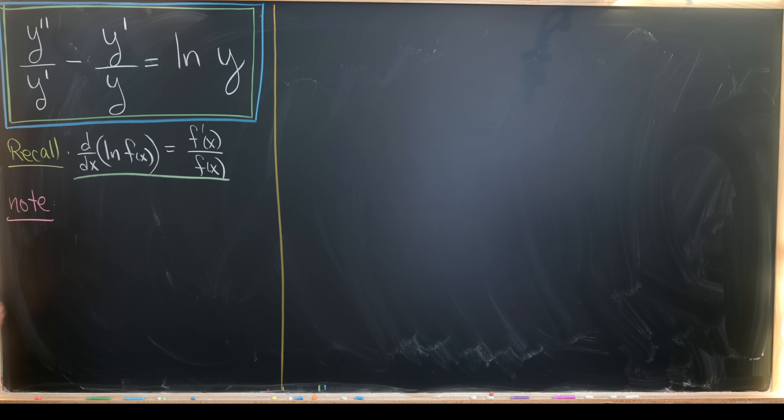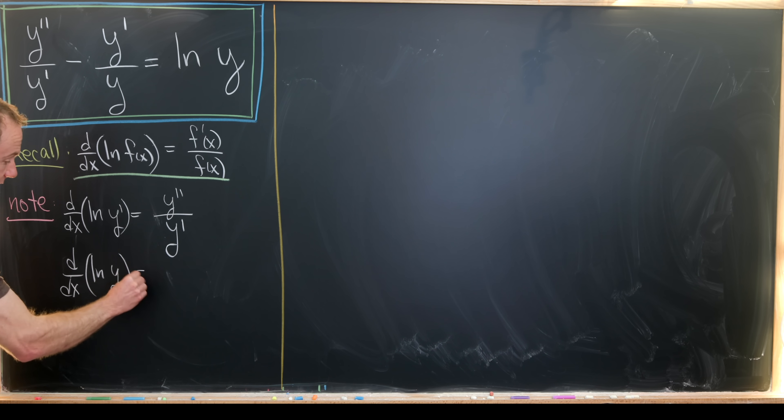That means we can rewrite the left-hand side using this. The derivative with respect to x of ln(y') will be y'' / y'. And the derivative with respect to x of ln(y) will be y' / y for the same reason. These two facts will allow us to rewrite the terms we're underlining in red.